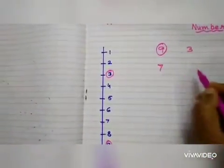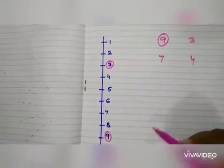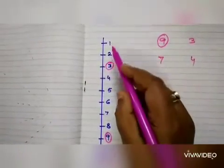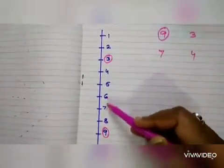Take one more example. 7, 4. Now can you tell me which number is the bigger number? Yes. Follow the number line. 1, 2, 3, 4, 5, 6, 7.